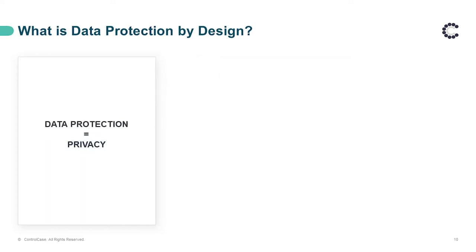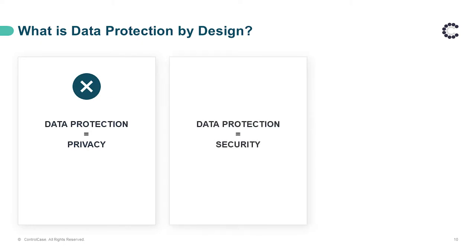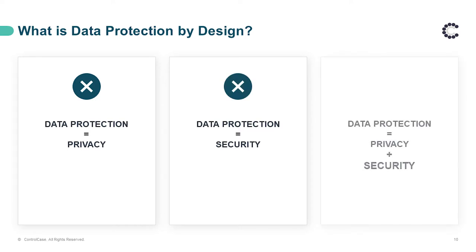In early days, implementing some privacy controls or policies was considered protecting the data. Or on the other hand, securing the infrastructure with technical security controls was considered the best way for data protection. Everyone was looking at isolated options or controls, considering them as protecting the data. But was that enough? Evidently not. As the industry evolved and incidents were registered, it was understood that an integrated approach should be considered for holistic data protection. So the industry moved towards synchronizing the implementations of privacy and security controls, complementing each other and getting a robust data protection framework. Thus, in today's world, data protection equals privacy plus security.